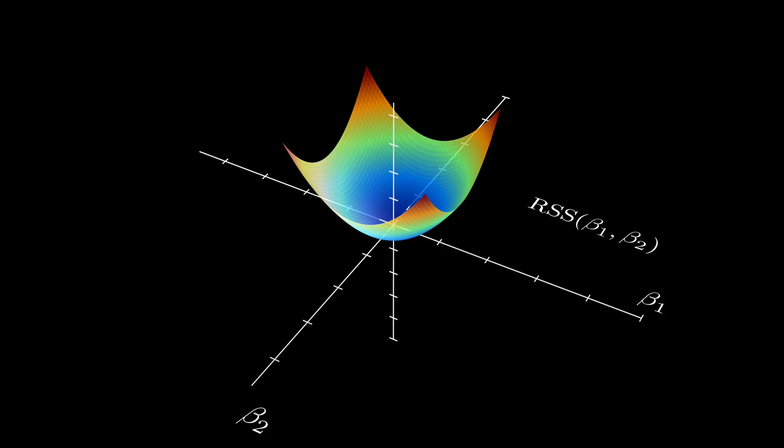So, here's how it works in practice. We start by randomly selecting a point in the parameter space. Let's call it bold beta to the 0, our initial guess for the parameters. Then, we compute the gradient of the loss function at that point, where the curly L is our loss function.